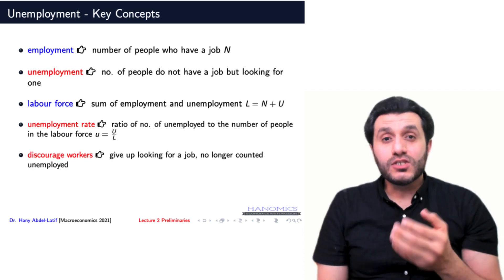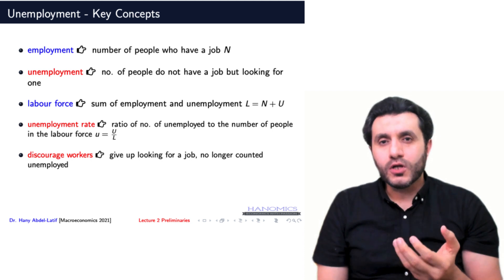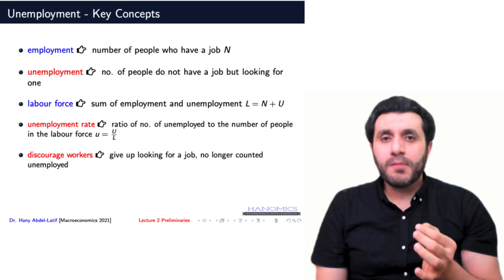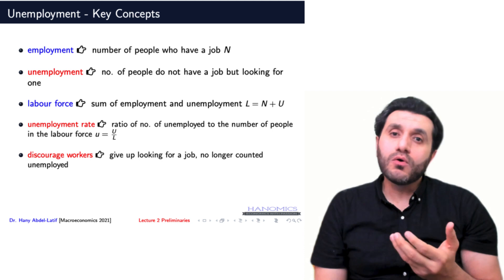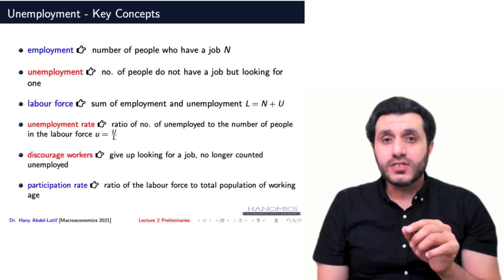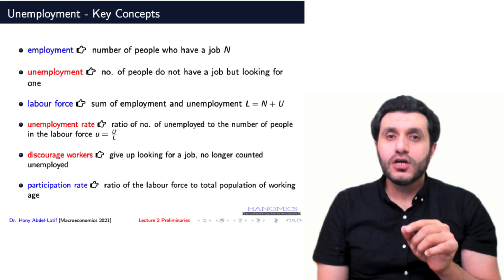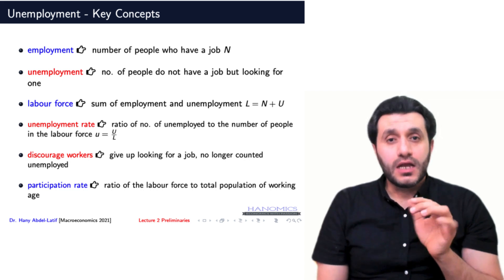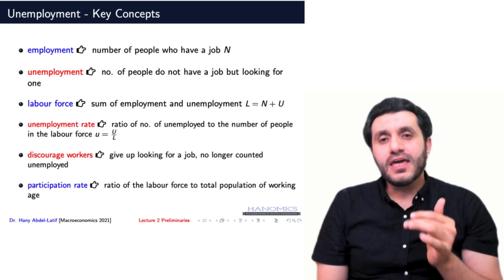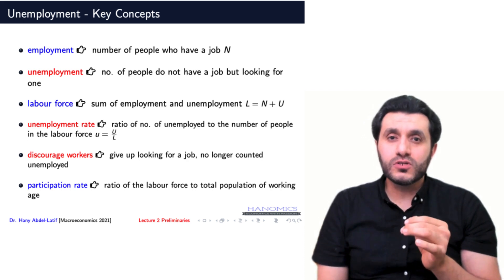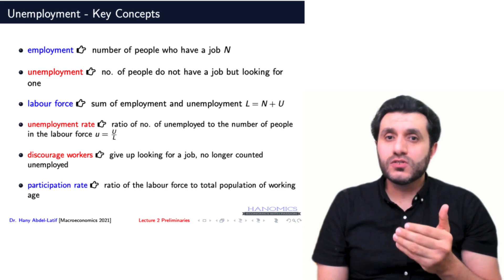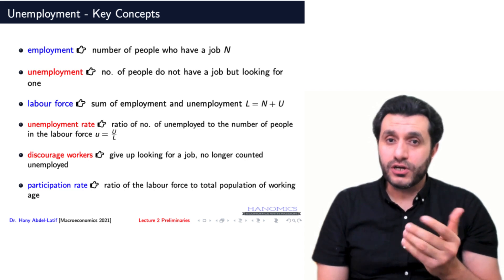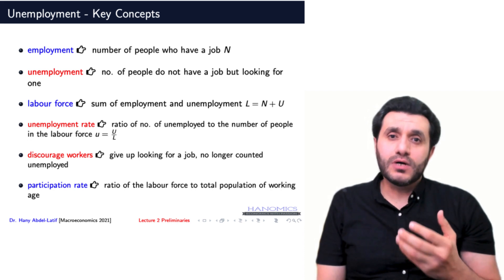A relevant concept is discouraged workers, which refers to people who do not have a job but would take a job if offered one. However, they have given up looking for work, so they are no longer part of the labor force. Another related concept is the labor force participation rate, which refers to the ratio of the labor force to the total population of working age — the percentage of the eligible population in the labor force, such as anyone 16 years of age or older who is not institutionalized, for example, not in prison or the military.